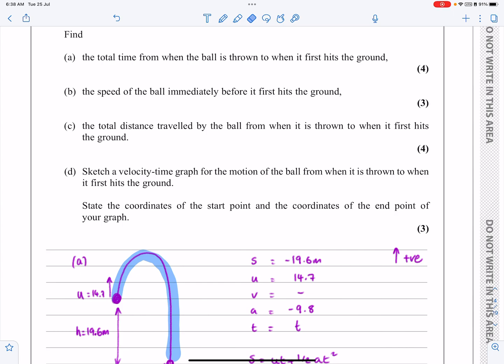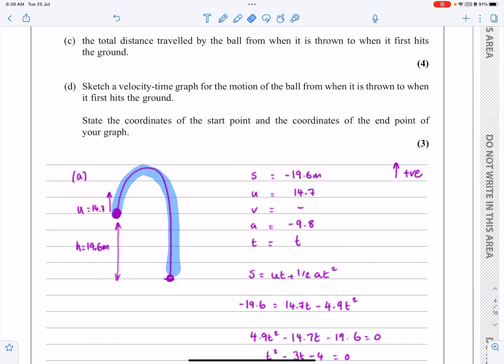OK, part C. The total distance traveled by the ball when it is thrown to when it first hits the ground. Right, well now I need to be very careful about what I do here. If I consider this same journey here, well then I already know if I put T equals 4, I'm going to get minus 19.6. That doesn't help me, well it helps me a little bit, but it doesn't tell me how far the ball has traveled. So what I now need to do is to actually consider two separate journeys here. I now need to consider from there to there, work out what that distance is.